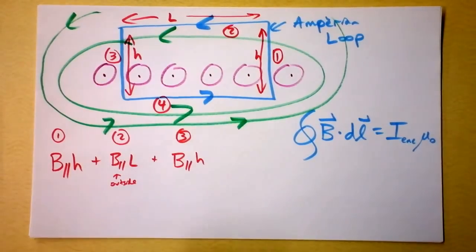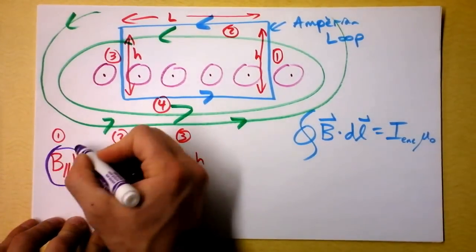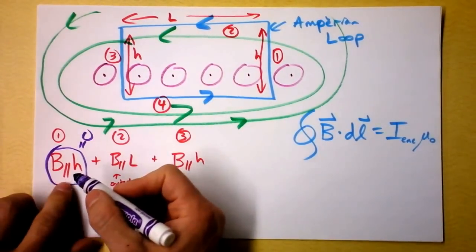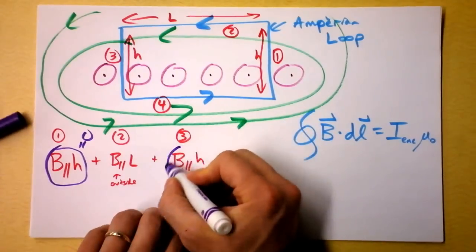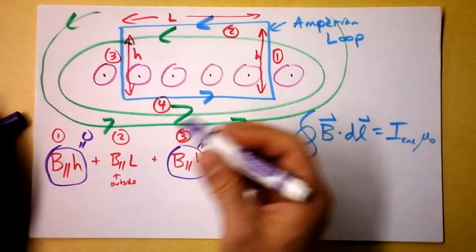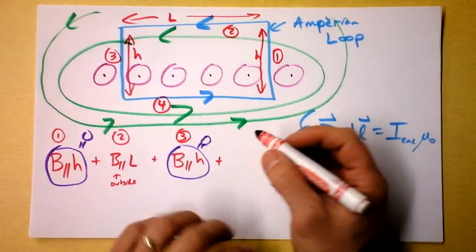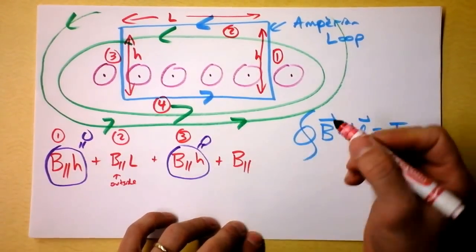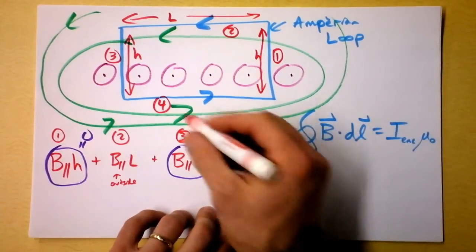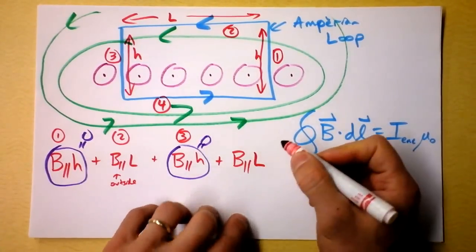Plus the contribution from the third section of my amperian loop, which is B parallel times H. And again, this is actually zero, because there is no parallel component there. And similarly here, there is no parallel component. And then I have to add on that last part, which is the magnetic field inside that's parallel, and that's going to be multiplied by the distance L.